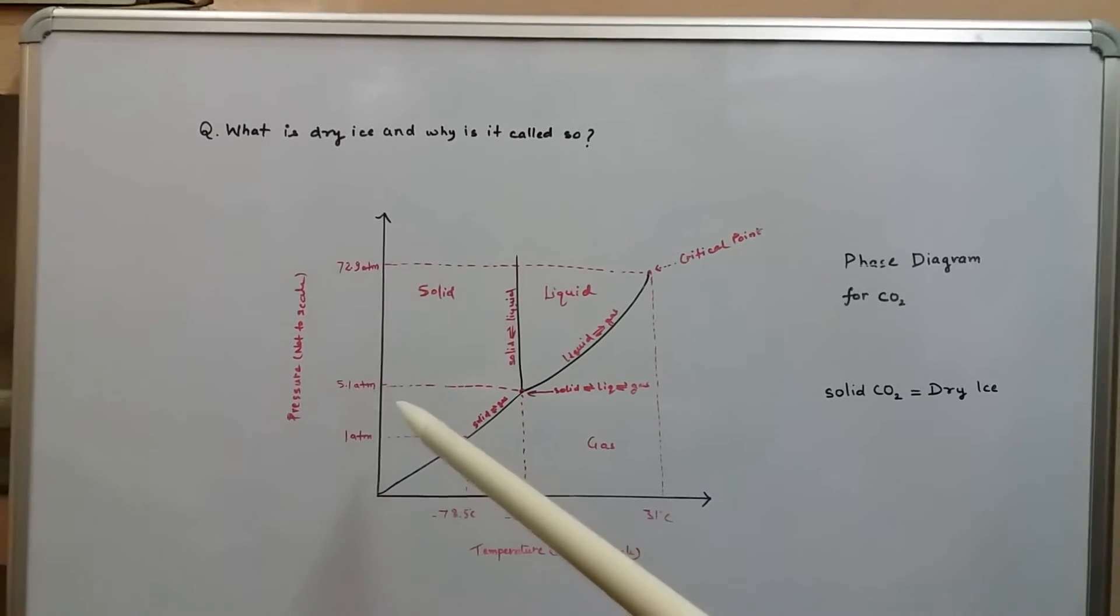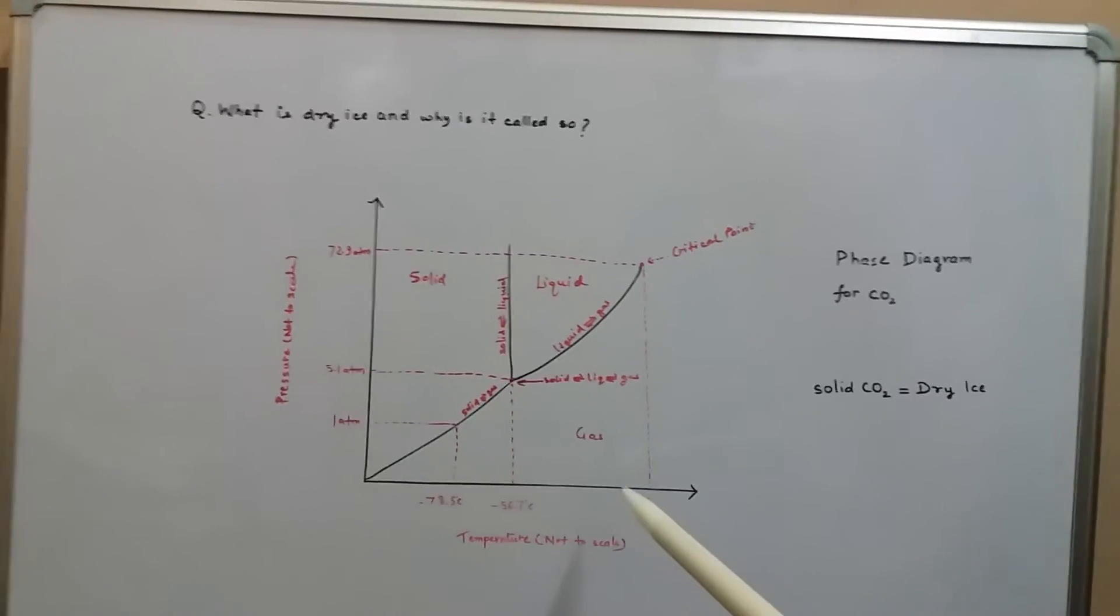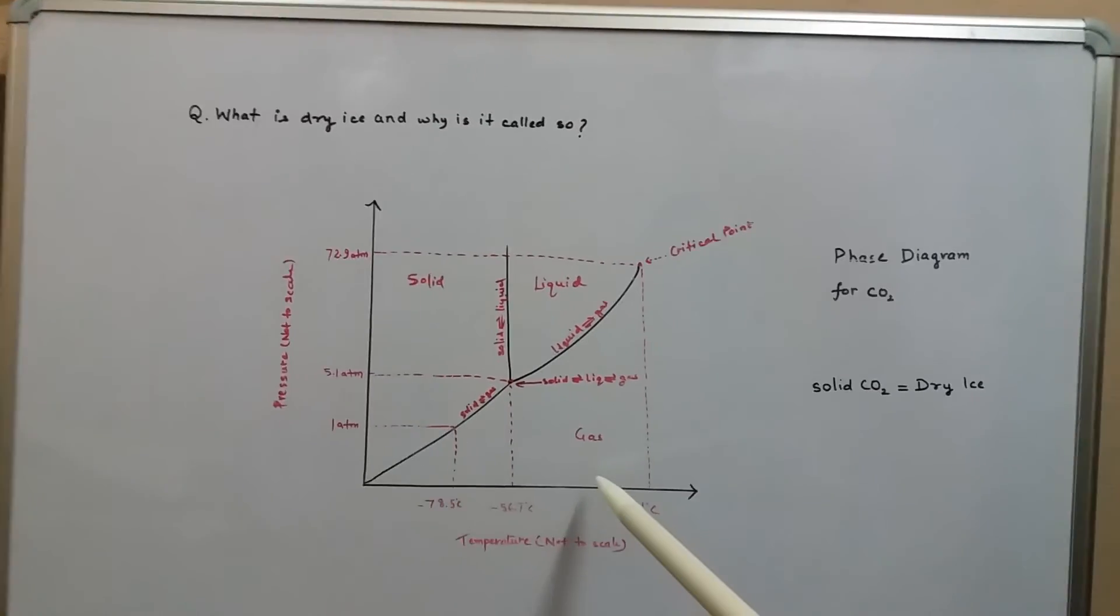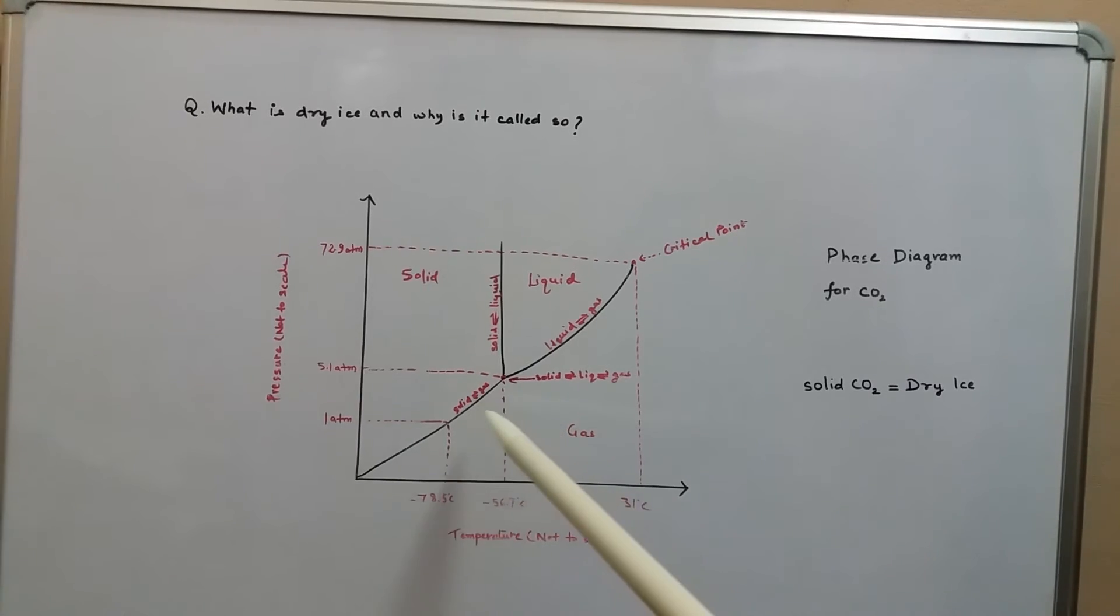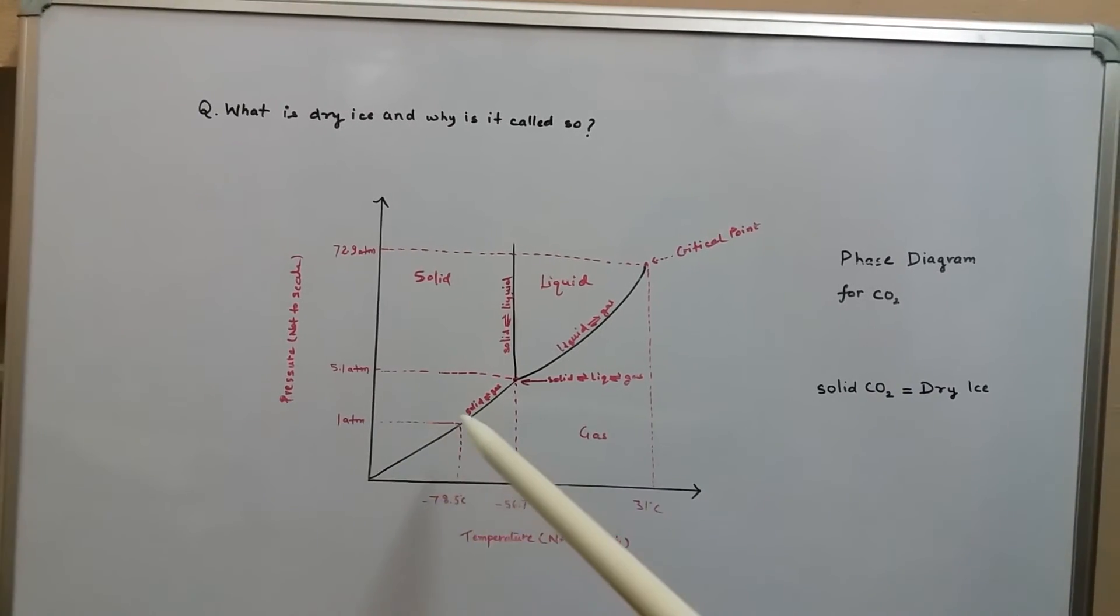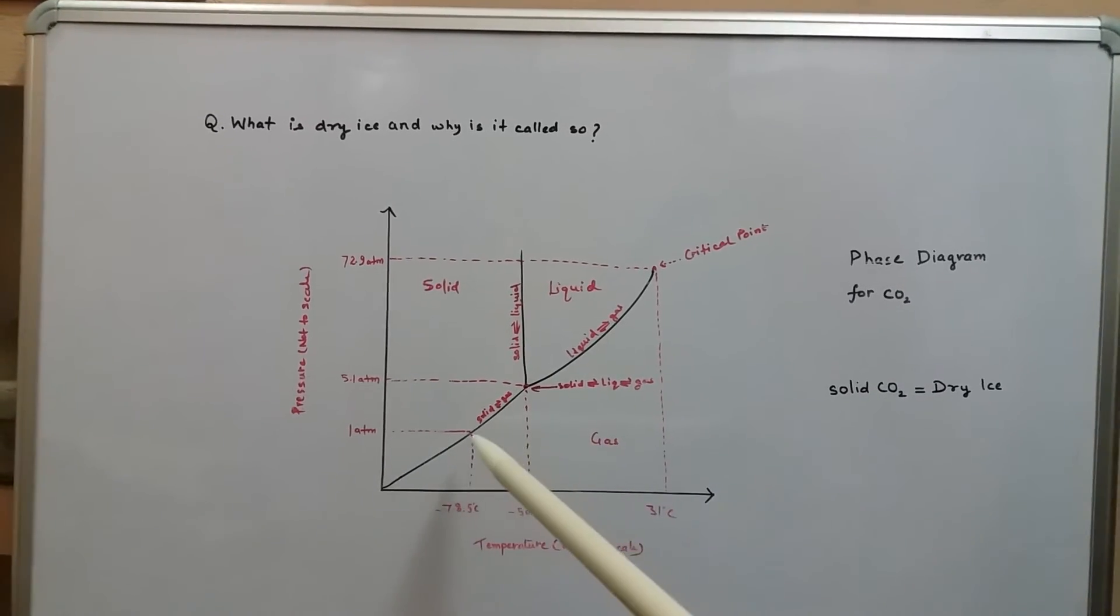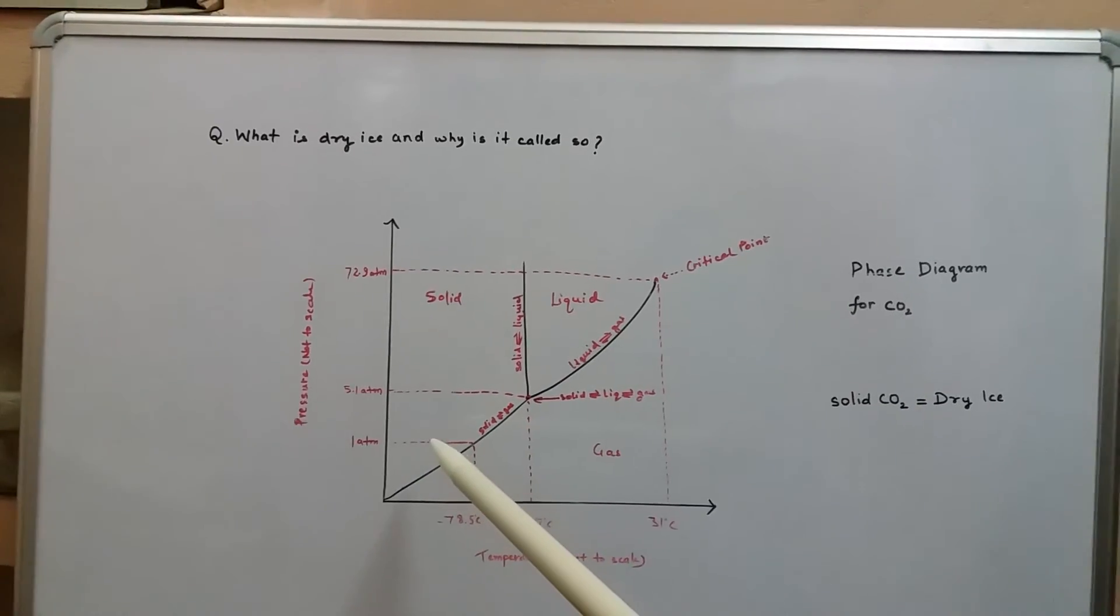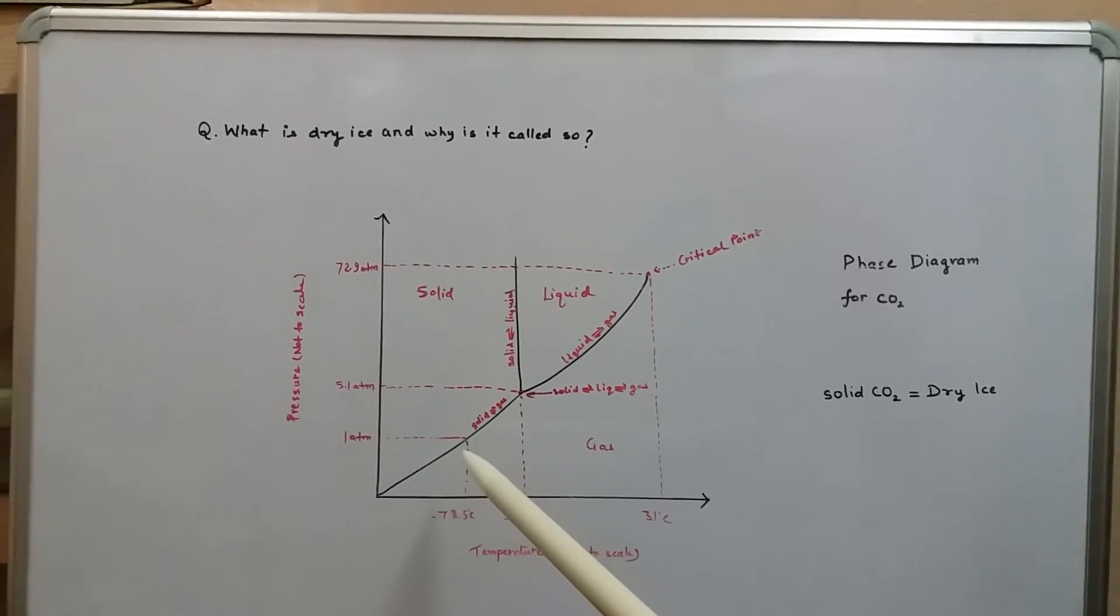At room temperature, which is around 25 degrees Celsius, and at 1 atm pressure, which is the normal atmospheric pressure, whenever we cool the carbon dioxide gas, it directly gets converted into the solid state without getting converted into the liquid state. Therefore, it is called dry ice.